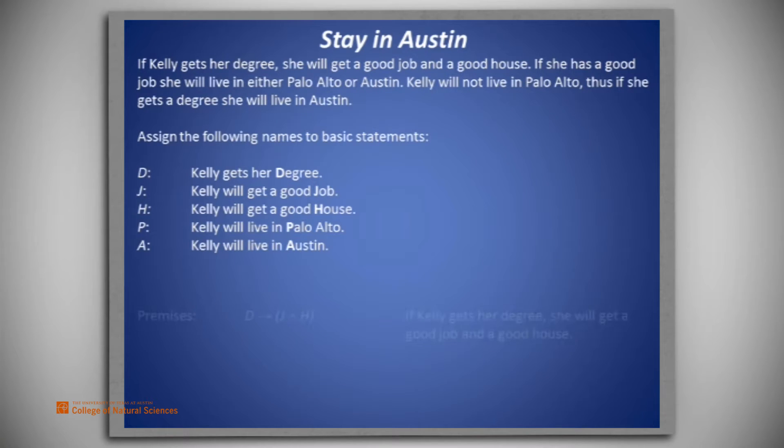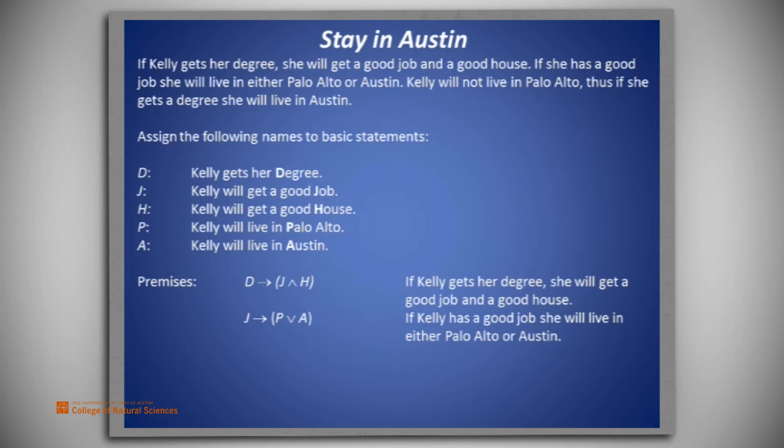From the story, we extract these premises. D implies J and H. That is, if Kelly gets her degree, she will get a good job and a good house. J implies P or A. That is, if Kelly has a good job, she will live in either Palo Alto or Austin. And finally, not P.